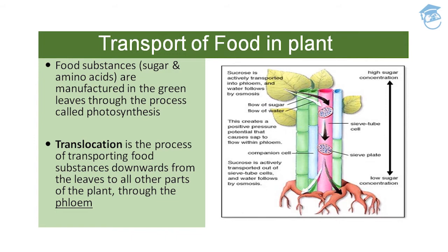First, an overview: transport of food in plants — food substances such as sugar and amino acids are manufactured in green leaves, which act as the source through the process of photosynthesis. Sucrose is actively transported into the phloem — represented here in pink — which contains sieve tube elements, and water follows by osmosis. This creates a positive pressure potential that causes sap to flow within the phloem.